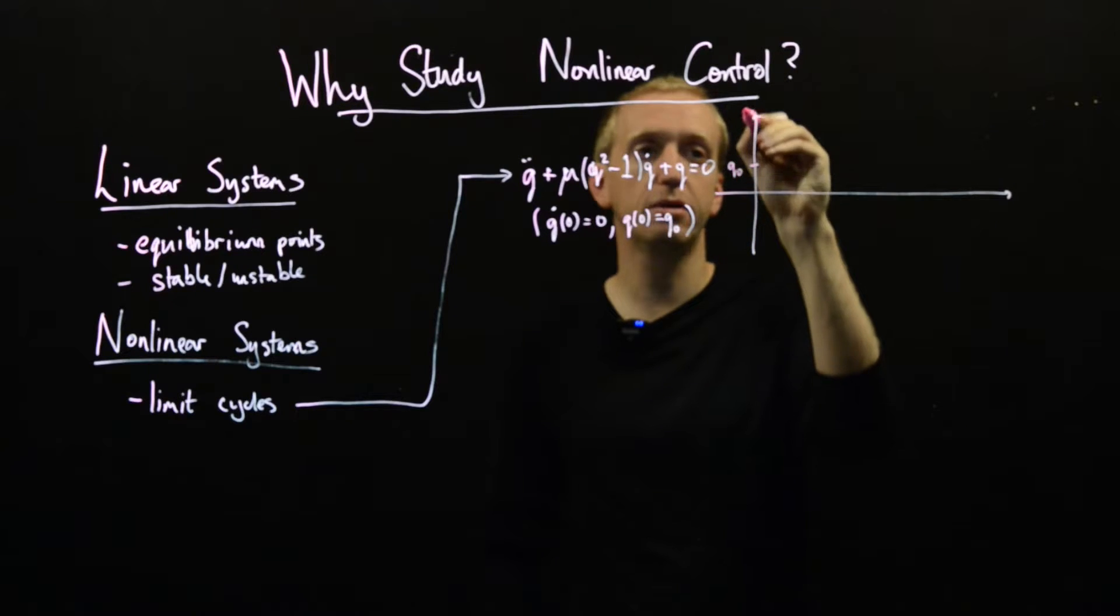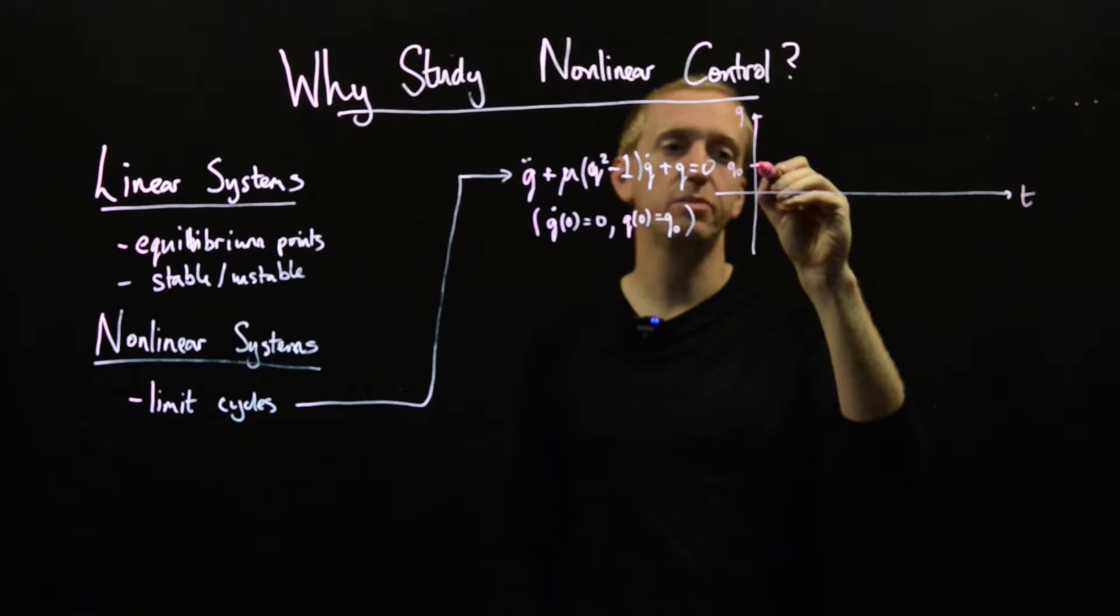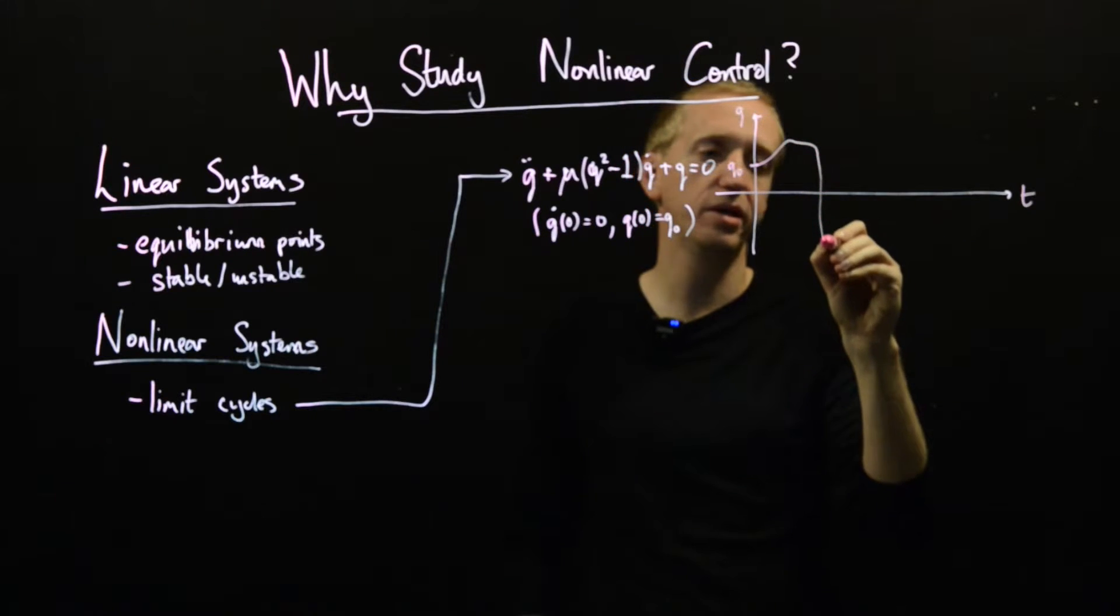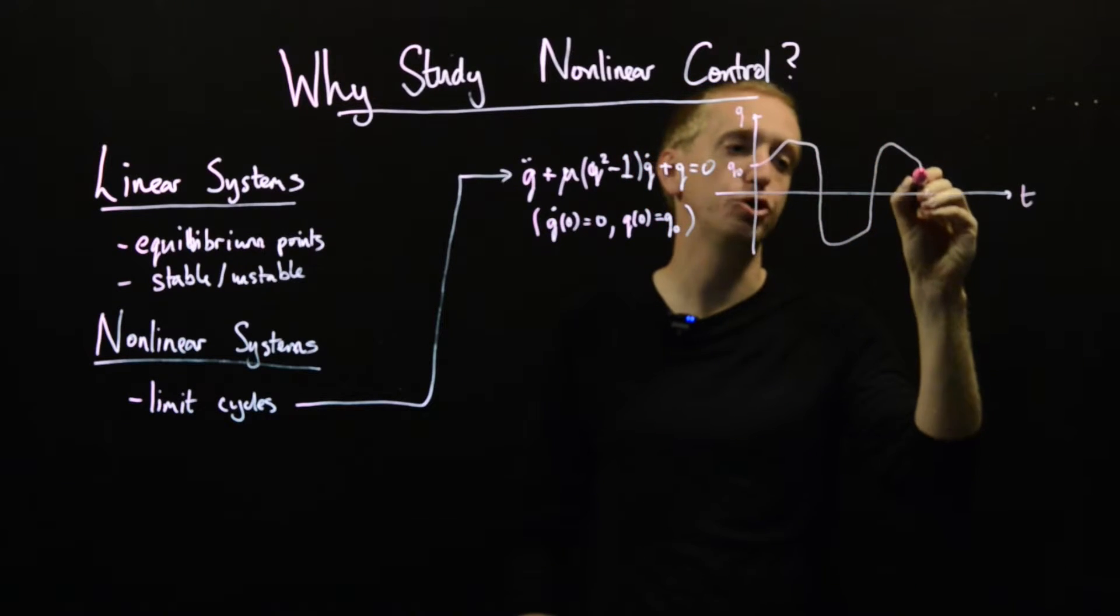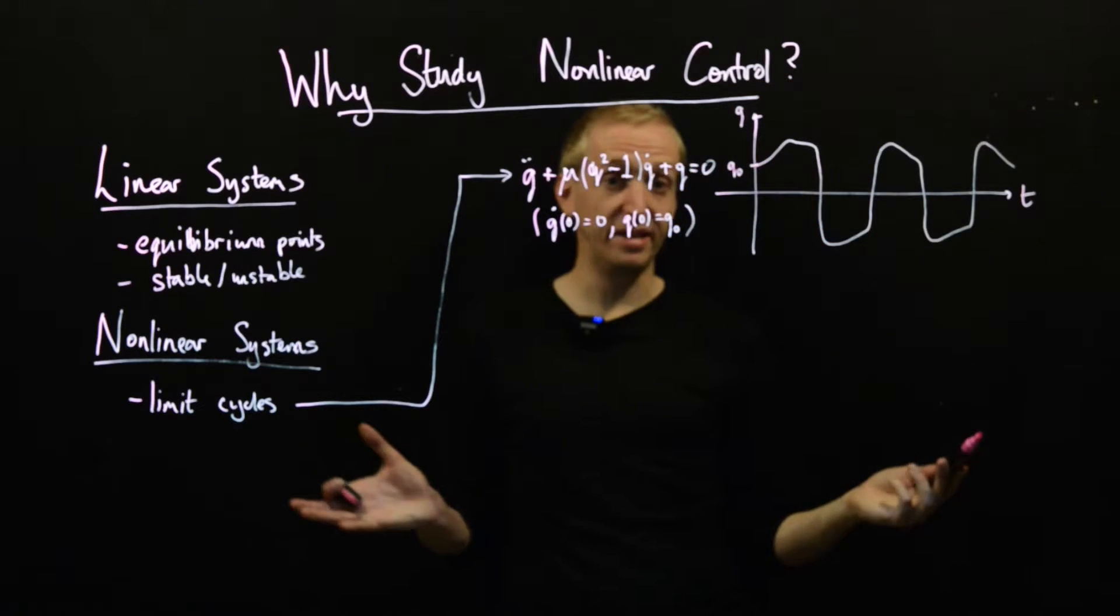So, this is q0, this is q and this is time. And we simulate it and we get these sort of weird oscillations. They look something like that. Okay, that's not particularly interesting yet.